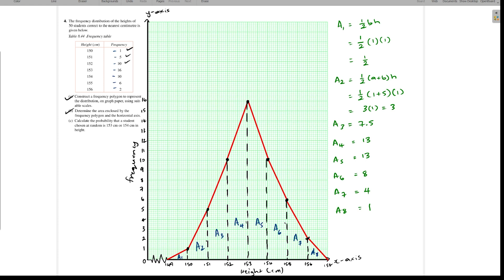Now we have all our areas. We can go ahead and total the areas. So if we have half, which is the same as 0.5 here, 0.5 plus 7.5, that's 8. 8 plus 3 is 11. 11 plus 13, 24. 24 plus 13, 37. 37 plus 8, 45. 45 plus 4, 49. And 49 plus 1, so total area is equal to 50.